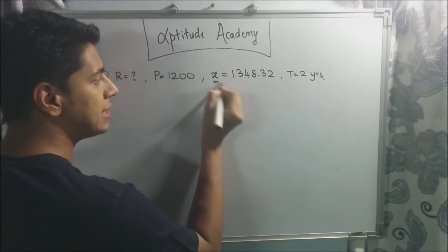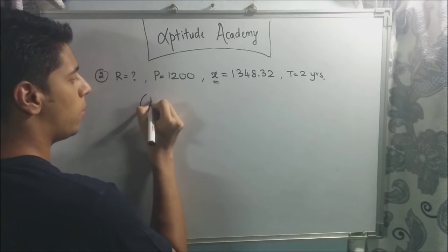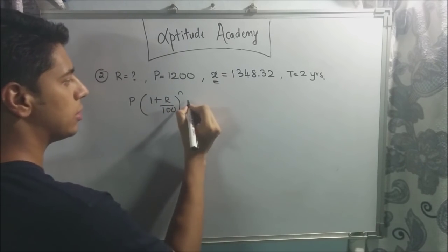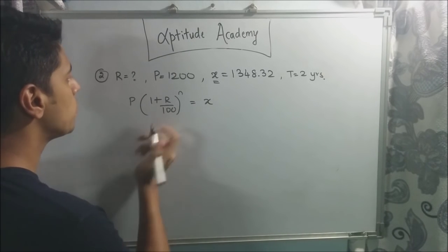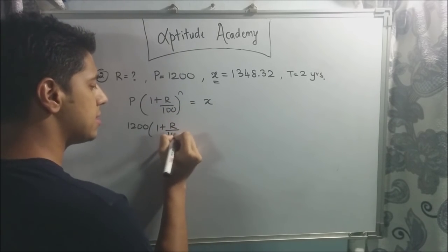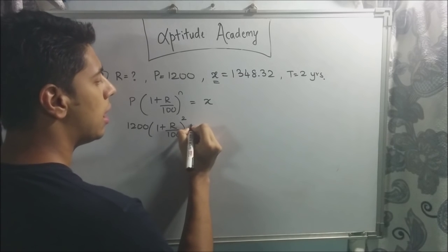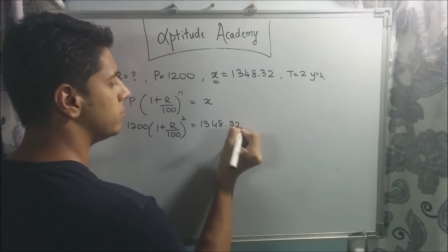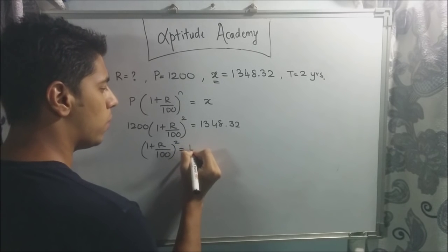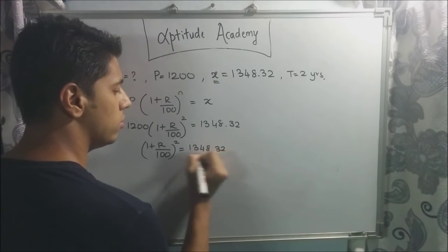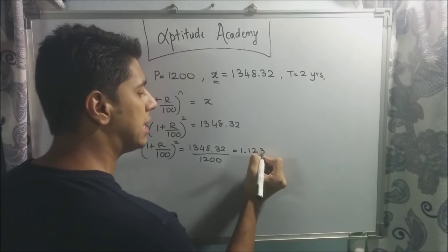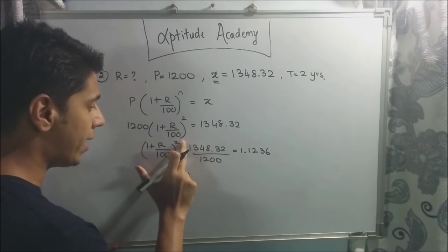The amount formula is A = P × (1 + R/100)^N. Substituting: 1200 × (1 + R/100)² = 1348.32. So (1 + R/100)² = 1348.32 / 1200, which simplifies to 1.1236.